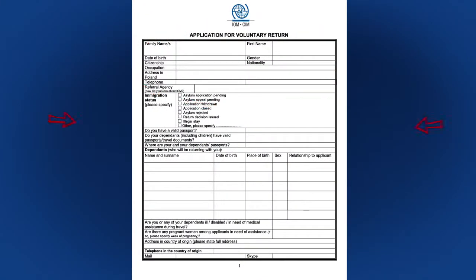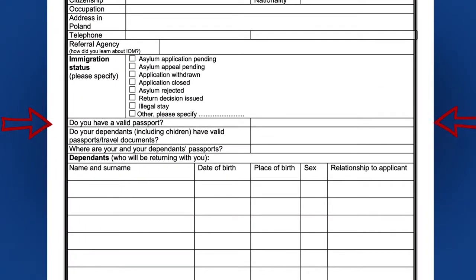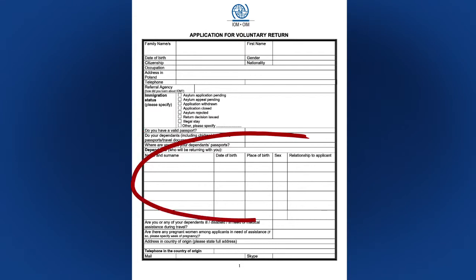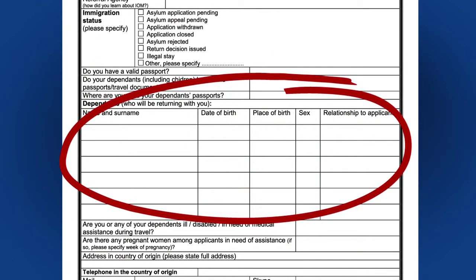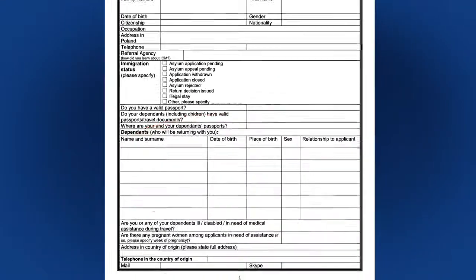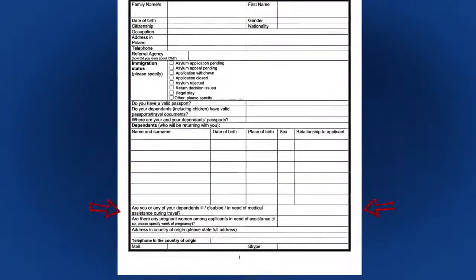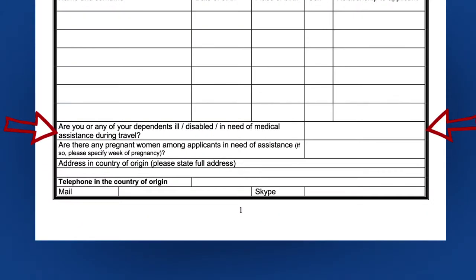Please indicate whether you have a valid passport. If you do not have a valid travel document, IOM can assist you in obtaining it. The application form must include all family members who will return with you. If you or someone in your family has health problems or needs medical care, please let us know. IOM will provide care before and during the journey.